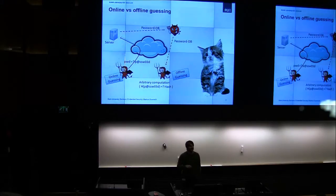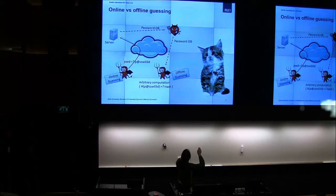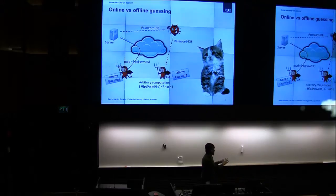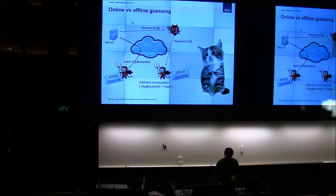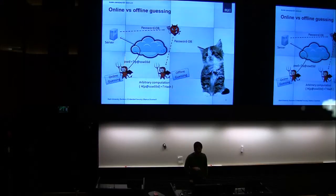What we are most interested in for this talk are offline guessing attacks. That's the case when the adversary gets all the information needed to verify a password locally on his computer — either because the password database leaked, or in the case of hard disk encryption where we have the information at hand. That means we can do a much larger number of verification guesses, on average in the billions.